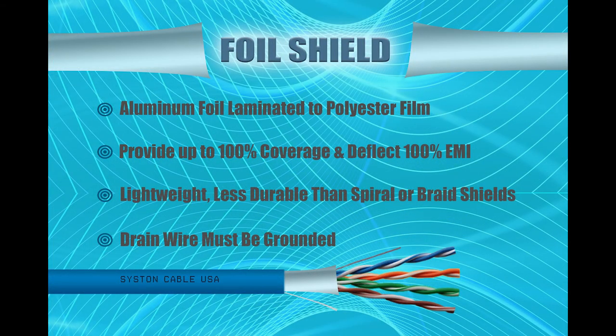Foil shields typically use an aluminum foil laminated to a polyester or polypropylene film. Foil shields provide 100% cable coverage, strength, and added insulation needed for electrostatic shield protection. Foil shields eliminate the gaps that exist in braided designs to deflect 100%.